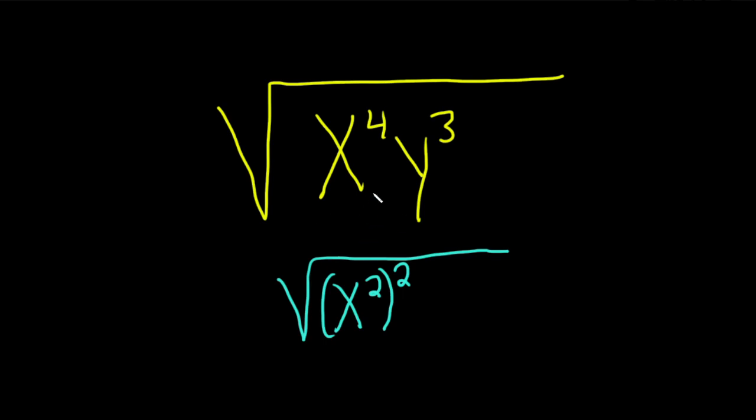And the y cubed, we can write that as y squared times y to the 1. And that's because when you multiply variables that have the same bases, you add the exponents. 2 plus 1 is 3.